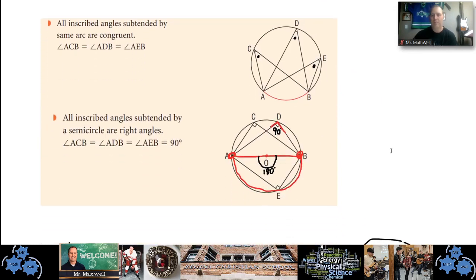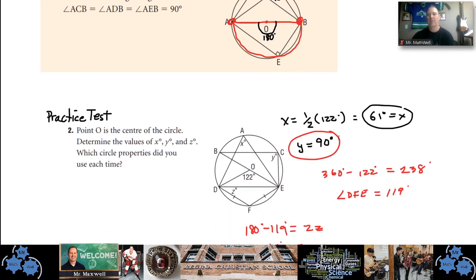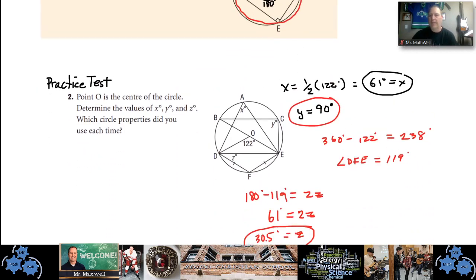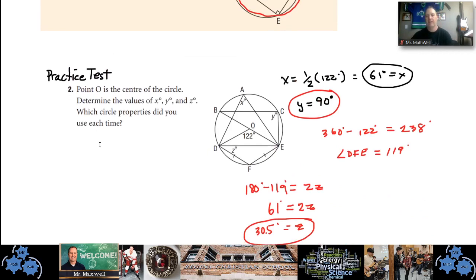Hopefully this is all fitting together. Let's look at number 2 in your practice test — it encompasses several of these points. It looks really complicated, but don't panic. The first thing I noticed is the big 122-degree central angle, which subtends the bottom arc. The inscribed angle x subtends the same arc, so x is one half of 122, which is 61 degrees.